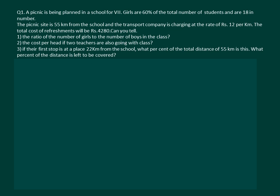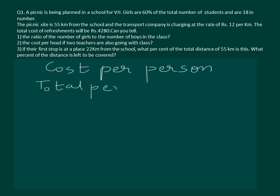Let's solve the second part of the same question, which asks us to find the cost per head if two teachers are also going with the class — that is, we need to calculate the cost per person. First, let us calculate the total number of persons who went for the trip: 18 girls plus 12 boys plus 2 teachers equals a total of 32 persons.